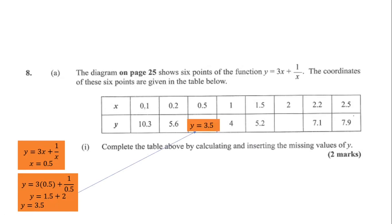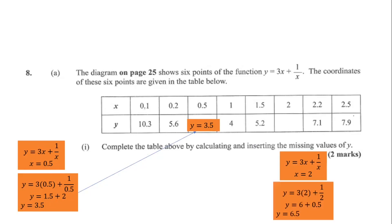Our first answer is y = 3.5 when x = 0.5. For the second value, using y = 3x + 1/x and substituting x = 2, we get y = 3 × 2 + 1/2, which is 6 + 0.5. Therefore y = 6.5 when x = 2.